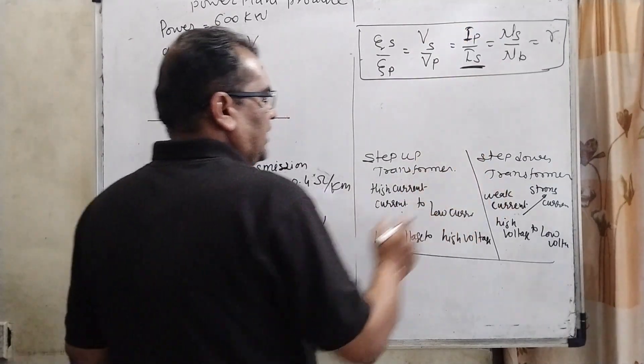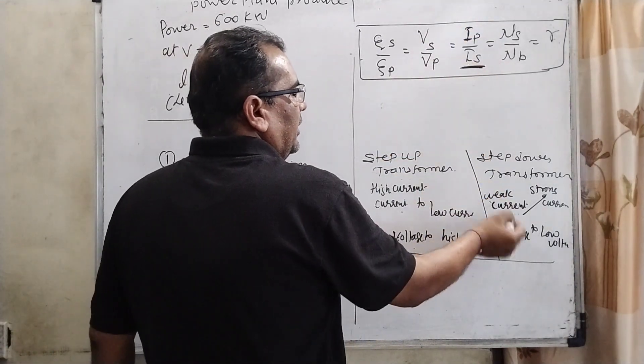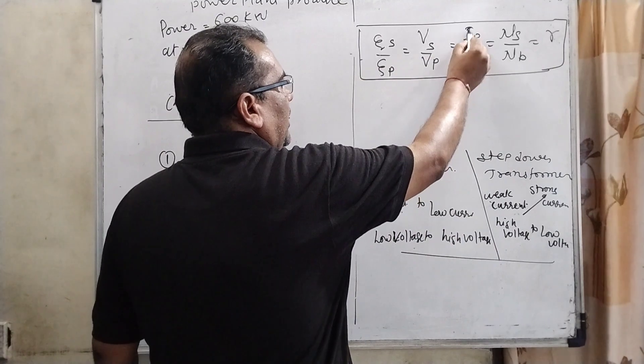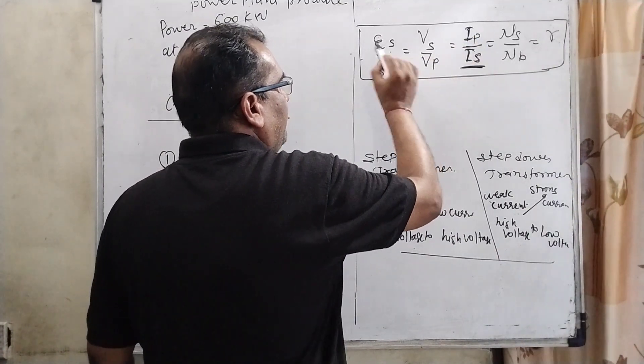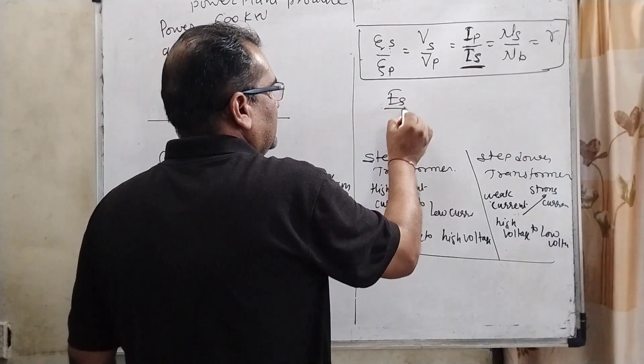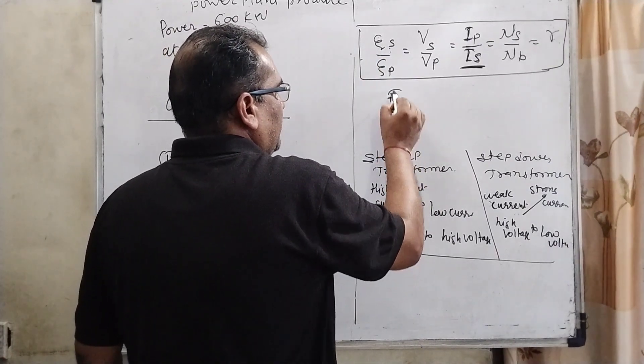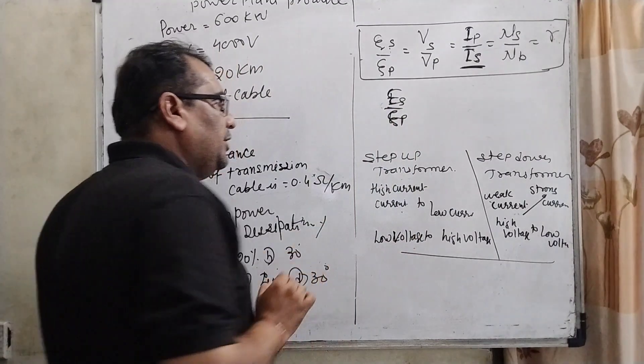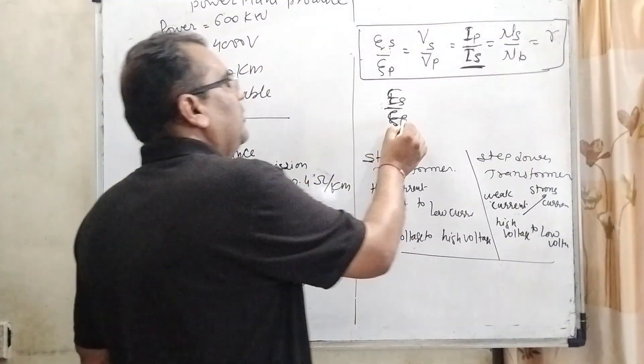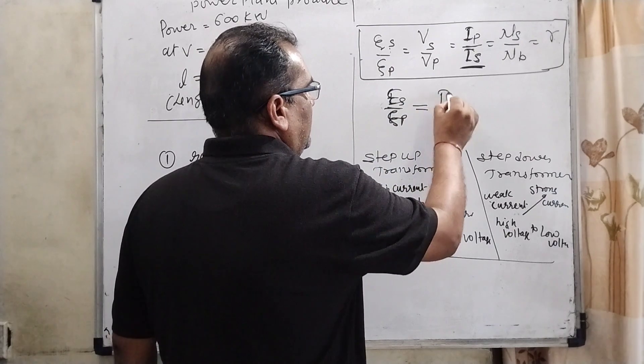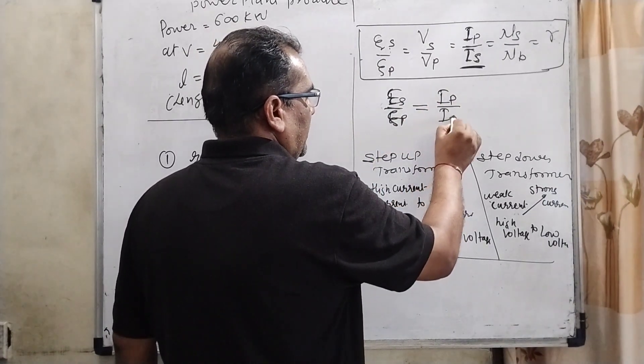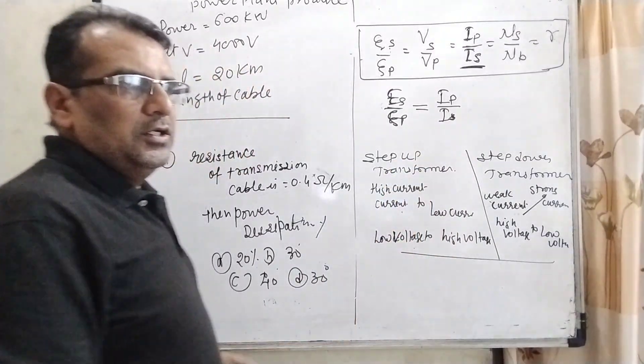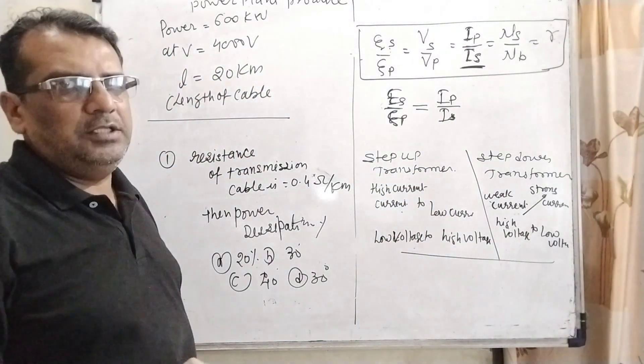Because you can see that here interchanges, current in primary coil. If ES is greater than EP means potential in secondary coil is greater than potential in primary coil, then current in primary coil is increases with respect of the secondary coil. So here the ratio is only change in the current.